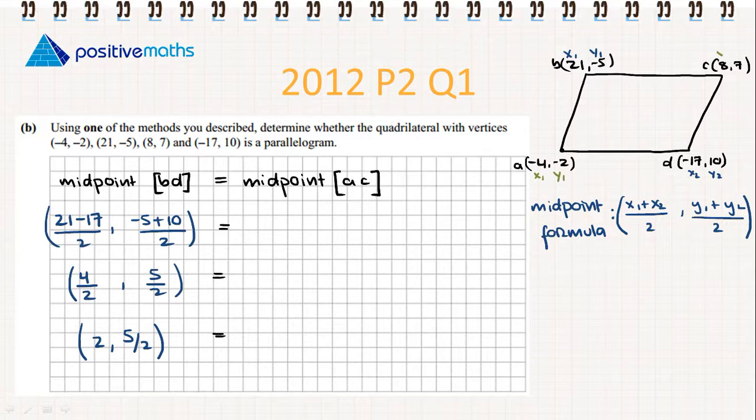Now we'll find the midpoint of AC. We're labeling our points x1, y1 and x2, y2. We have (-4 + 8)/2 and (-2 + 7)/2. When we simplify, we get 4/2 and 5/2, so our x value is 2 and our y value is 5/2.